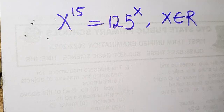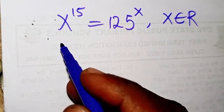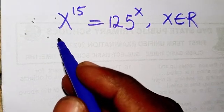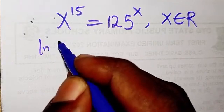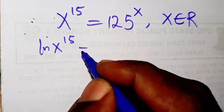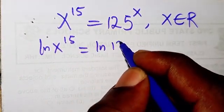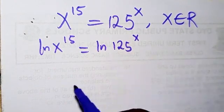I know somebody has already been looking at the question to see how they are going to solve it, and that's very good. Now I'll begin by introducing a natural log to both sides of the equation. We are going to have ln of x to the power 15 equals ln of 125 to the power x.